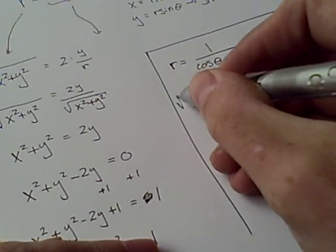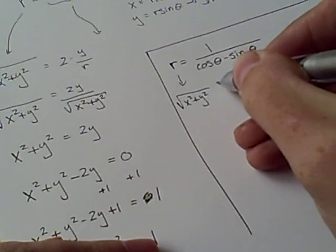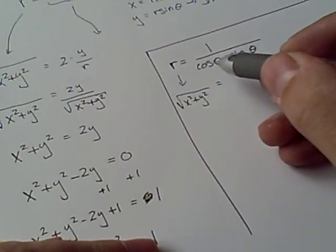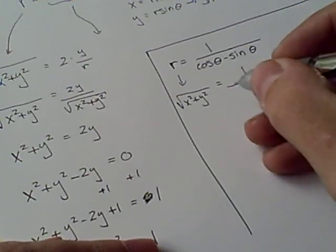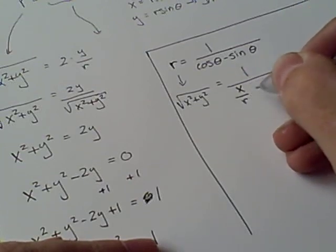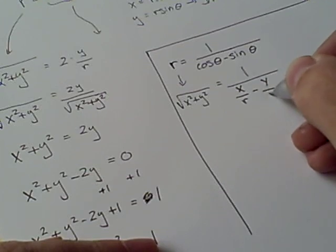Well, let's go ahead and substitute what r is: x squared plus y squared. And then we'll substitute for cosine and sine, just like the last problem. Cosine is x over r, and sine is y over r.